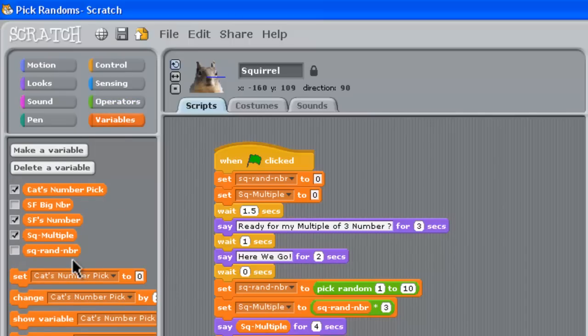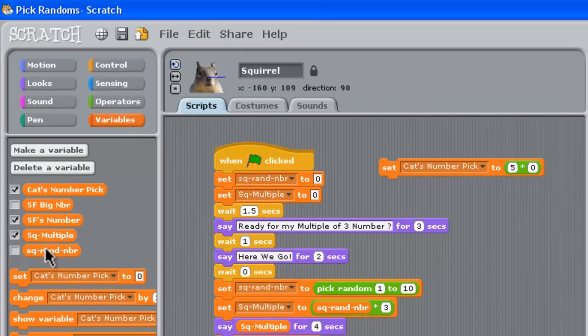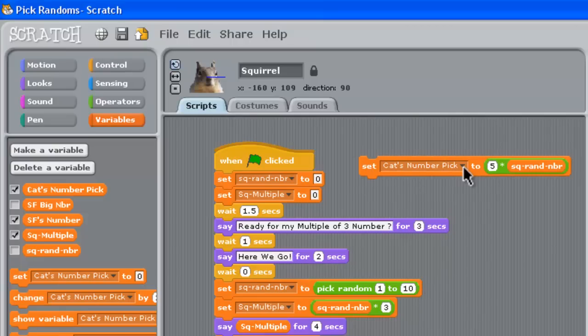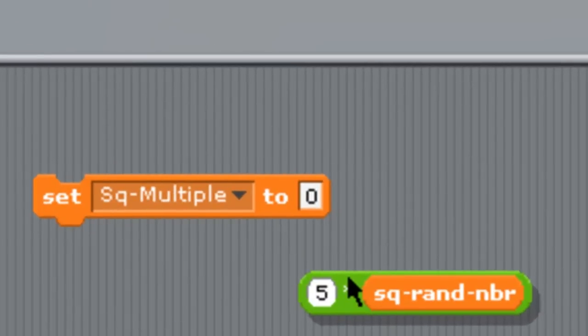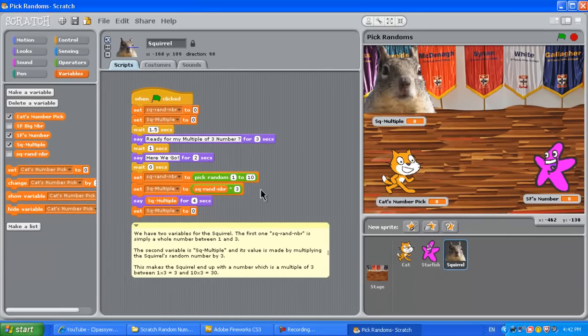Alright, so normally in the variable if you pulled out a set command, you could pick one of your variables. But what you can also do is go to an operator, put a green thing in there. We could set it to the green thing in here, and then we could say if we want multiples of 5, we could go 5, and in here go to variables and get the squirrel's original random number and pop that in there. So you end up with set the squirrel's multiple to 5 times what his random number was. So you can create, rather than setting it to 0, you can use a green block here, add some things in, and that's how you get the multiple.